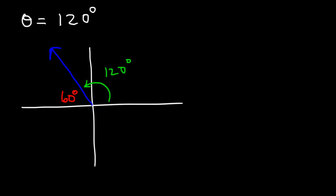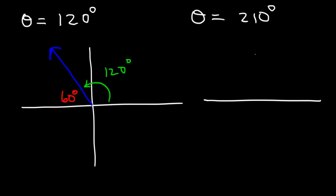So let's try another example. What is the reference angle for an angle that's 210 degrees relative to the positive x-axis? So this is 210, and we know the negative x-axis is 180, so the difference is 30.